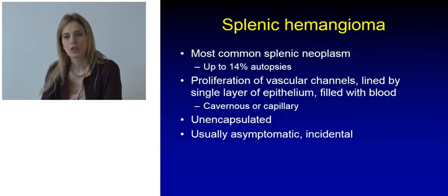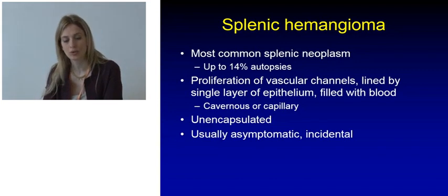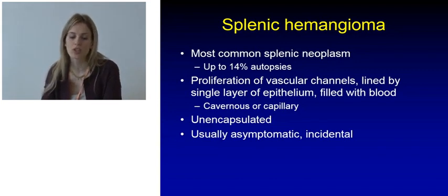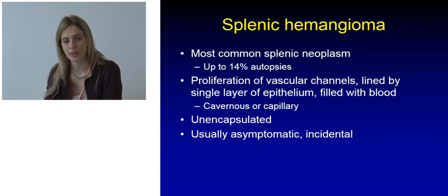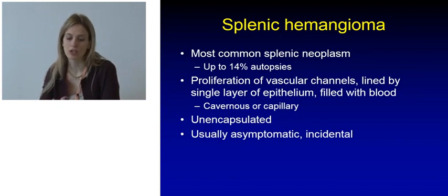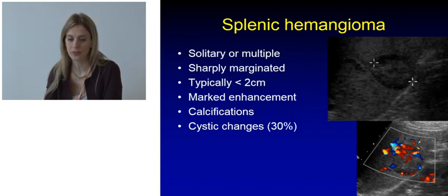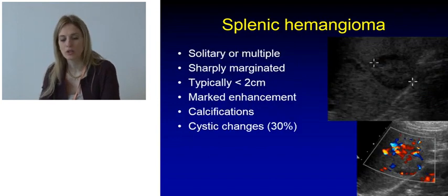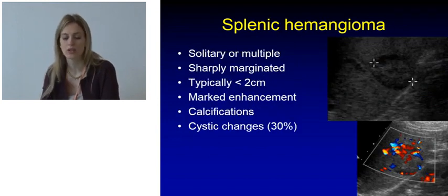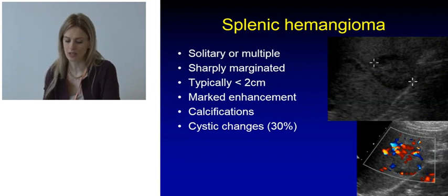The most common splenic neoplasm is splenic hemangioma, which is observed in up to 14% of autopsies and is a proliferation of vascular channels lined by epithelium and filled by blood. These lesions are non-capsulated and are again an incidental finding. They can be solitary or multiple, have well-defined margins, usually are small — less than 2 cm — and will show a marked enhancement.